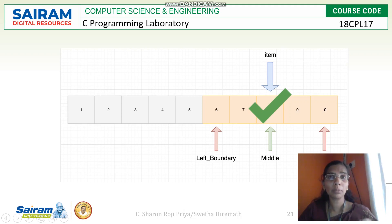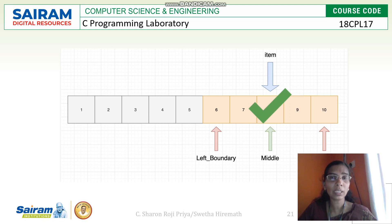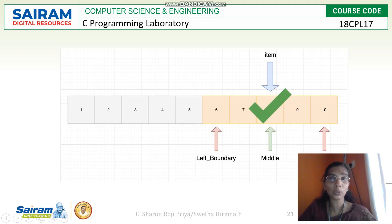Now, in binary search I am supposed to search an element in the array. You can take any element and search it. You read the search element from the user, then check whether the search element is less than or greater than the middle. Suppose your search element is 8 — it is greater than the middle. So the first index, pointed by variable 'first', needs to be moved.